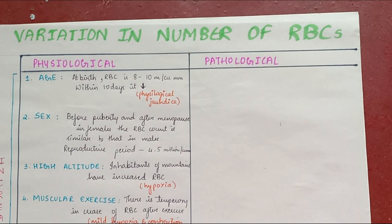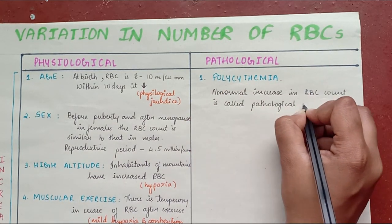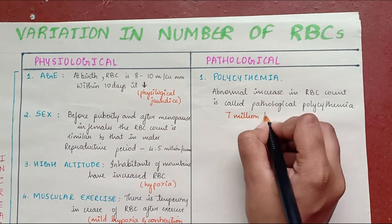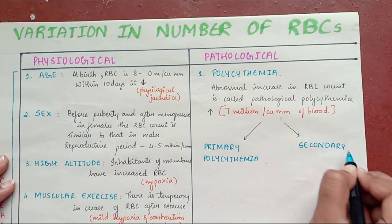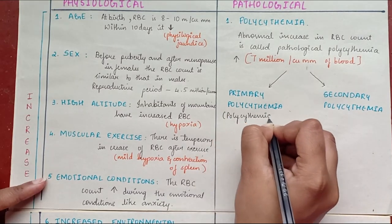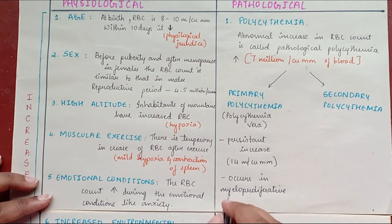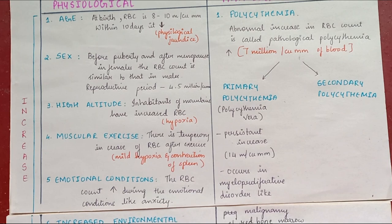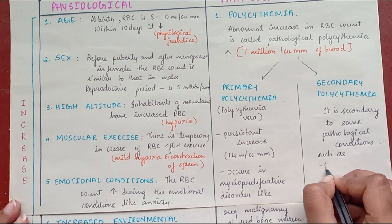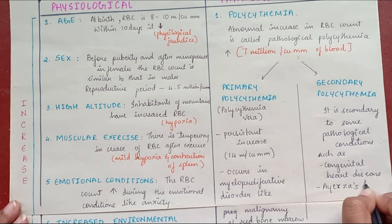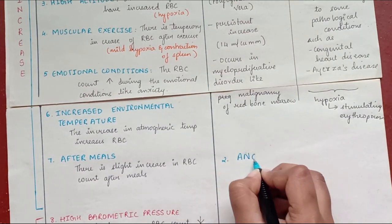Pathological variations: The abnormal increase in RBC count is called pathological polycythemia, where the count increases above 7 million per cubic millimeter. Polycythemia is of two types — primary polycythemia, with a persistent increase above 14 million per cubic millimeter occurring in myeloproliferative disorders like malignancy, and secondary polycythemia, which is secondary to conditions such as congenital heart disease, all of which lead to hypoxia that stimulates erythropoiesis.